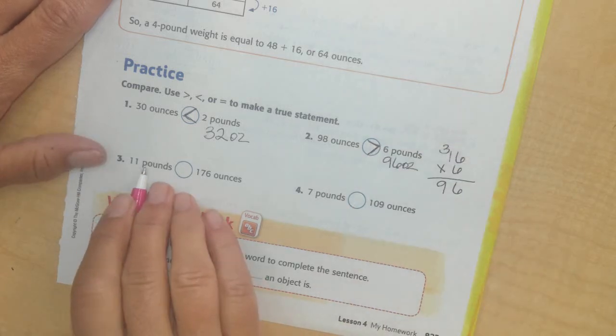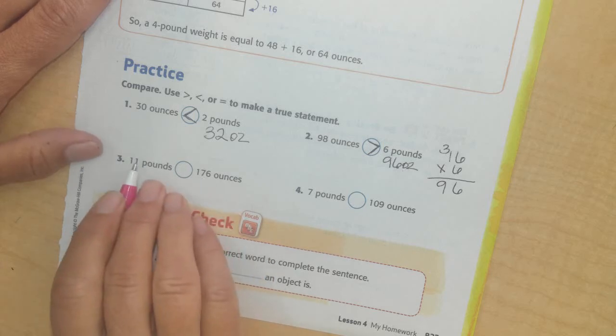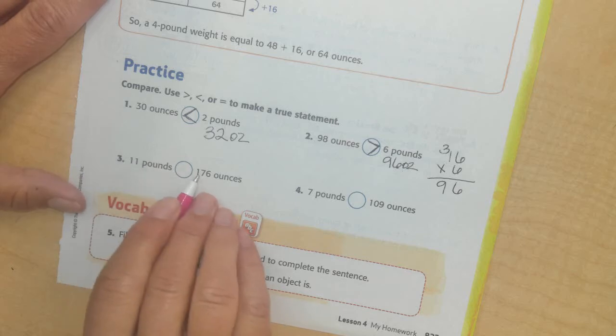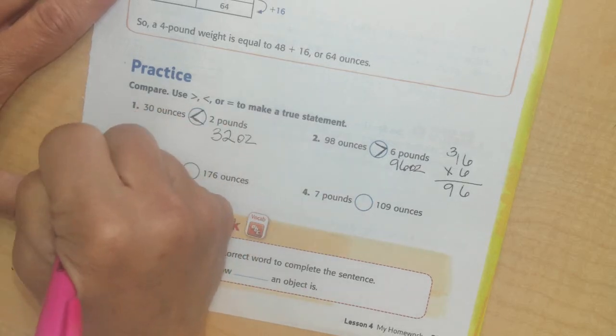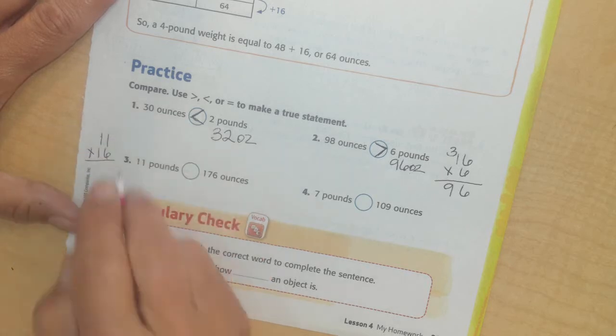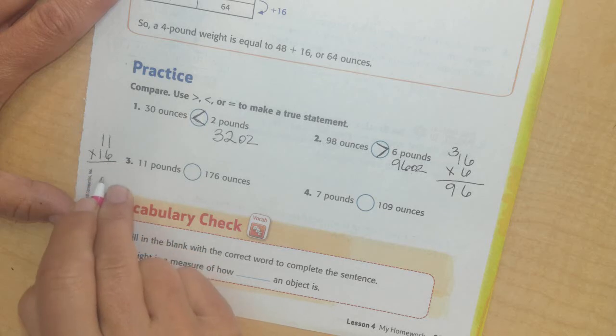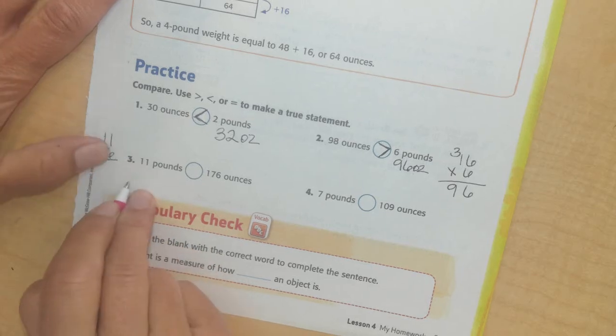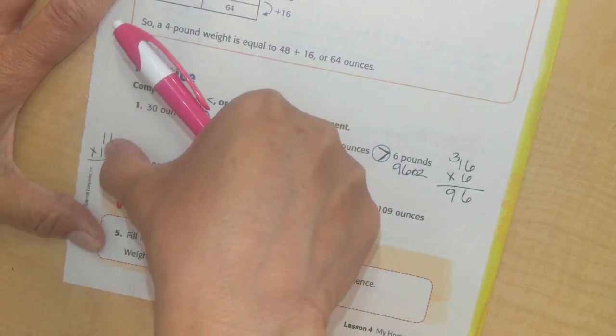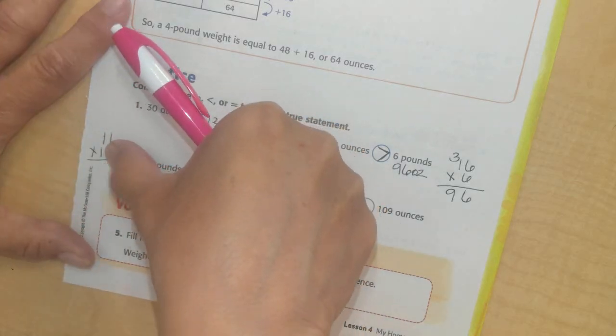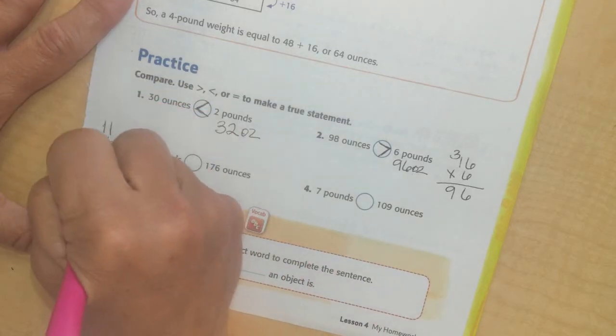So now I have 11 pounds compared to 176 ounces. I need to convert my 11 pounds into ounces so I can compare them. So I'm going to take 11 times 16. I have double digits on the bottom, so I have to have two numbers and I'm going to add them together. First I'm going to multiply 11 times 6, then I'm going to multiply 11 times 10 and add those numbers together.